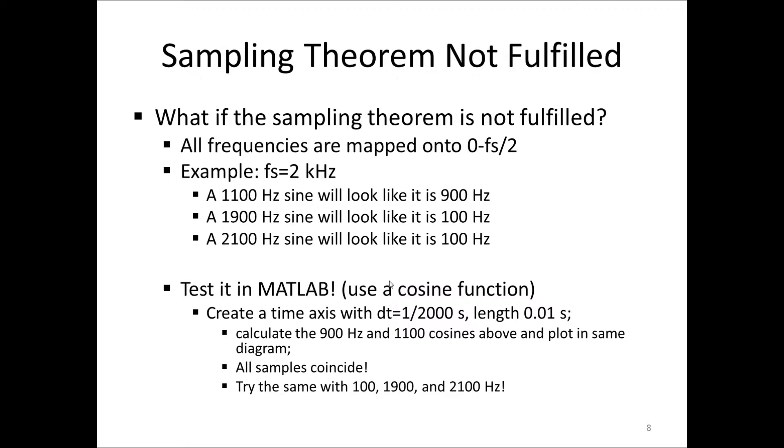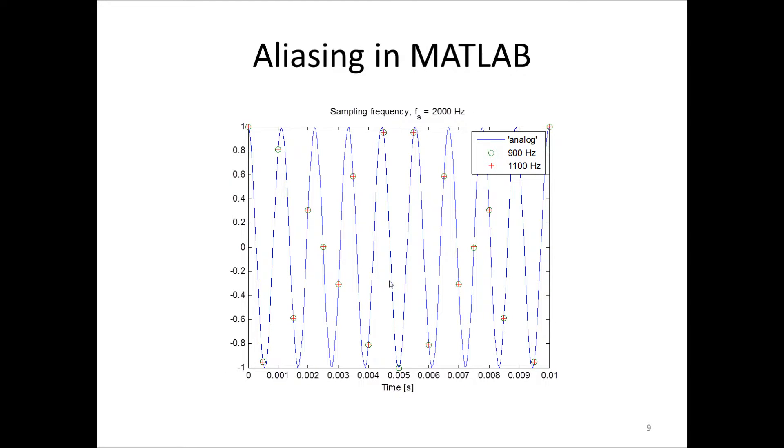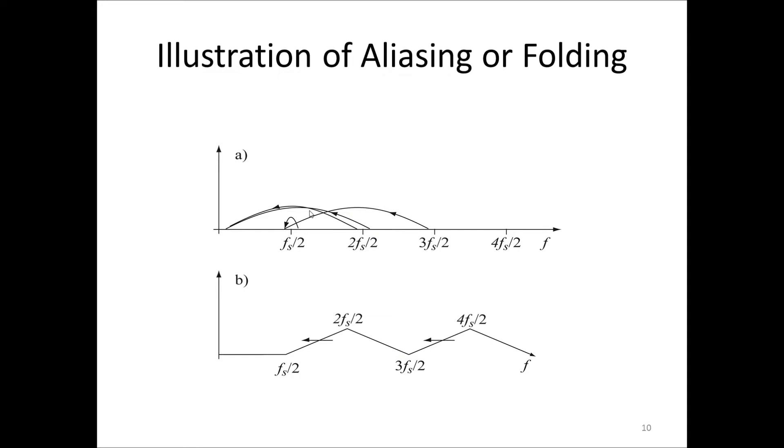And you will see that they all coincide. Here is an illustration of that first example where we also have plotted a finer resolution with 10 kHz sampling in blue. And then we have the 900 and 1100 Hz samples. And you see that they completely coincide. This phenomenon is called aliasing. And we will now see why. The phenomenon can be described or illustrated in two different ways. In the upper plot here, it is shown how the 1100 Hz sine is appearing as 900 Hz. And the 1900 and 2100 Hz are appearing as 100 Hz sines. Illustrated this way, the phenomenon is called aliasing. Since the frequencies appear as other frequencies than they actually are.